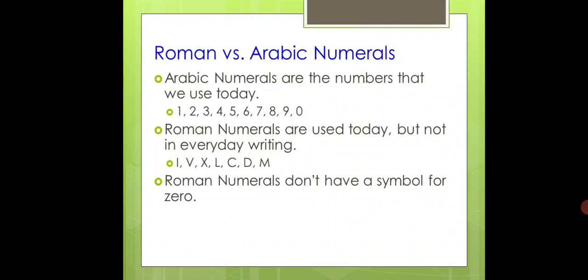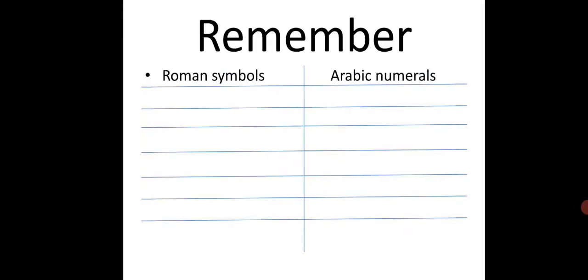Roman numerals are used today but not in everyday writing. What are the numbers? Seven alphabets: I, V, X, L, C, D, M. Roman numerals do not have a symbol for zero. Students, you guys have listened to my lectures about Roman numerals before. We just want to revise you this topic.